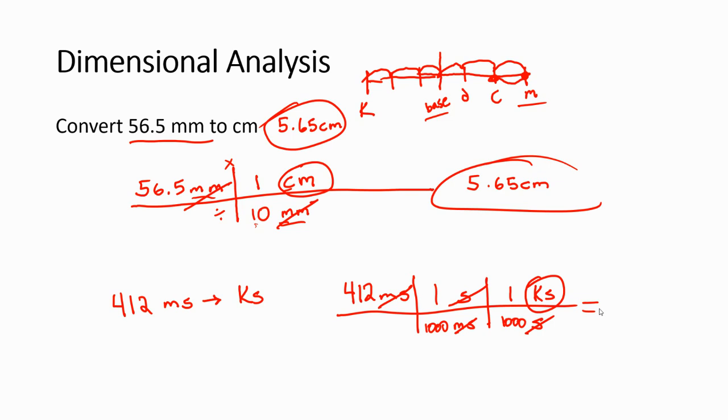And if you do that, you're going to get, in this particular case, let's do it on our calculator, 412 divided by 1,000, divided by 1,000. I get 0.000412. And that's kiloseconds.